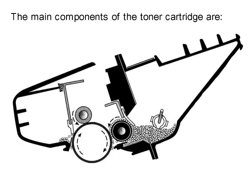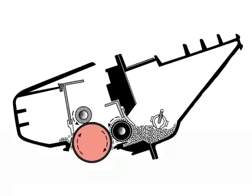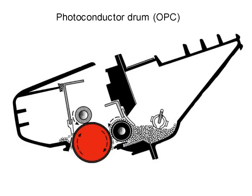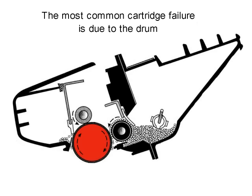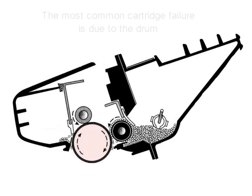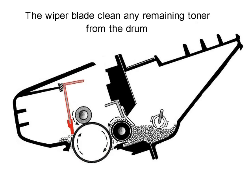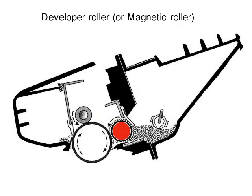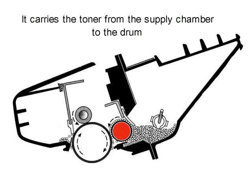The main components of the toner cartridge are the photoconductor drum — the most common cartridge failure is due to the drum — the wiper blade, which cleans any remaining toner from the drum, and the developer roller, which carries the toner from the supply chamber to the drum.